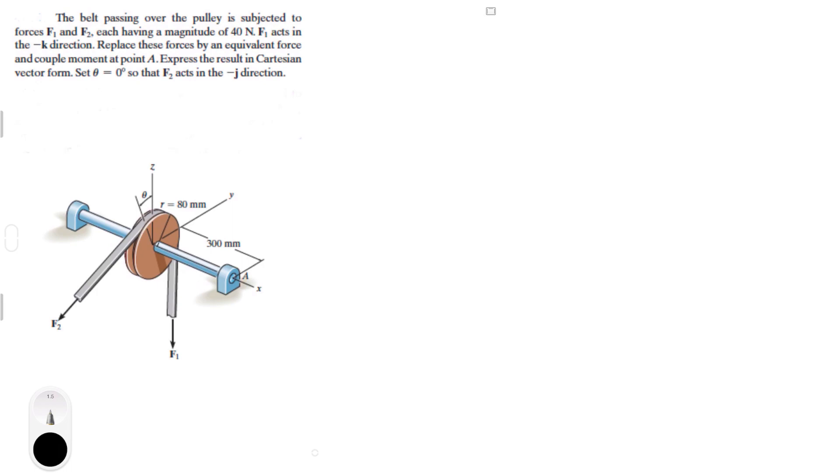Hey guys, now we're going to do this problem that says the belt passing over the pulley is subjected to forces F1 and F2. Here's F1 and here's F2, each having a magnitude of 40 Newtons. So let's put F is equal to F1, which is equal to F2. These are magnitudes, which is equal to 40 Newtons.